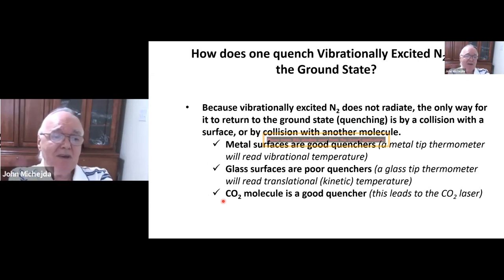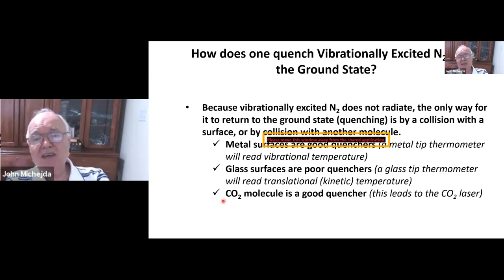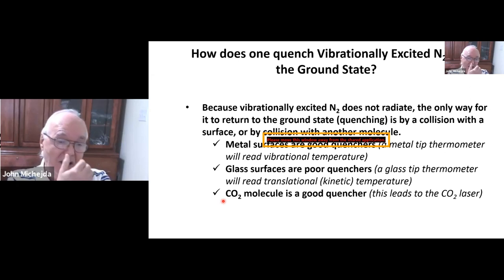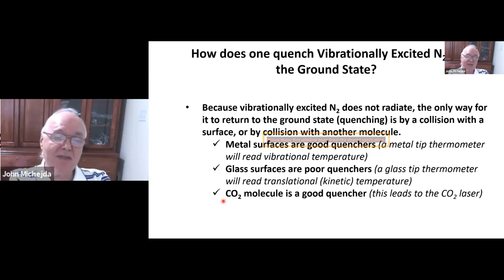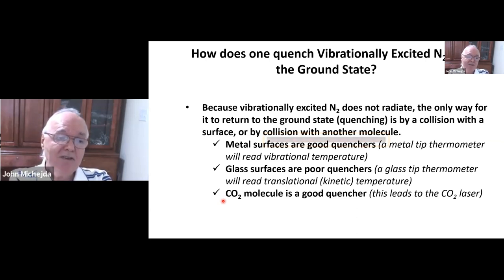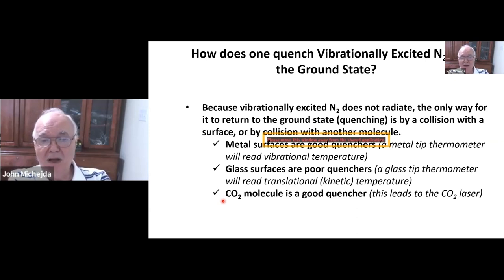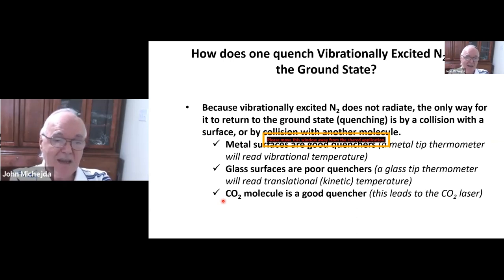Carbon dioxide is also a good quencher for nitrogen. This leads to the CO2 laser and also has some implications for global warming, though those implications are small. In the atmosphere, after events such as thunder and lightning, you create a lot of vibrationally excited nitrogen which mostly gets quenched by CO2, which then radiates back to Earth. The energy of the lightning gets transferred to the surface of the Earth.